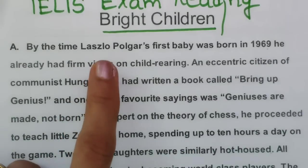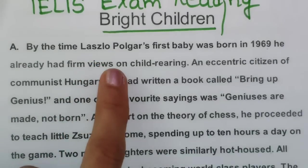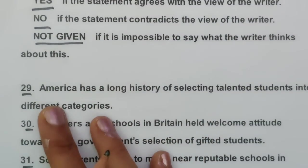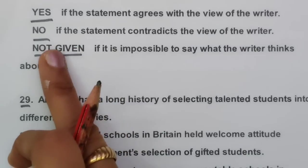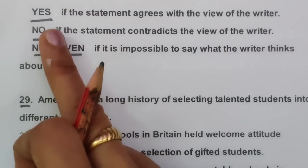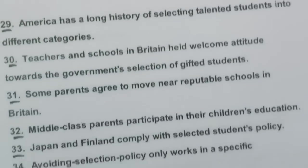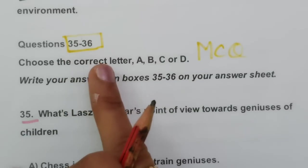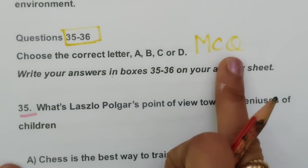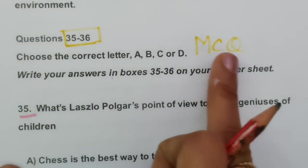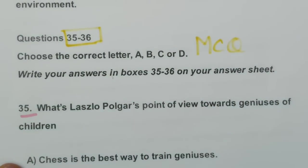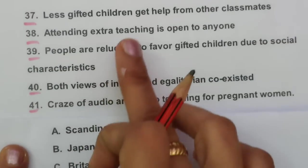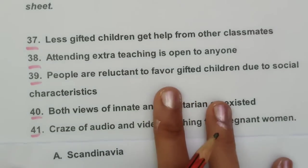After reading the title, I will not read anything here — I will go straight to the question statements to identify what type of questions we have. First, we have Yes/No/Not Given, which is almost like True/False/Not Given — the only difference is the instructions. Questions 29 to 34 are Yes/No/Not Given, questions 35 to 36 are MCQs, and the third type is Match the Country — matching country names with given statements.